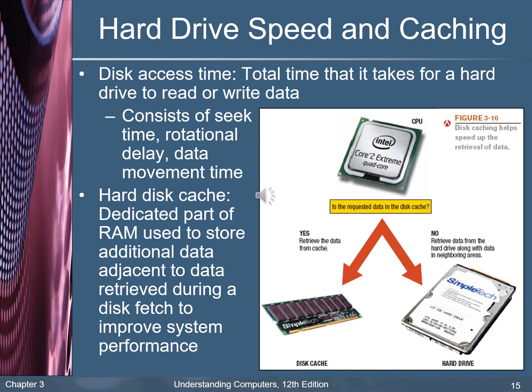In the previous chapter we spoke about CPU time and the computer clock and differentiated between both of them. Here we also need to mention disk access time, which represents the total time it takes for a hard drive to read or write data. It consists of seek time, rotational delay, and data movement time. Hard disk cache is a dedicated part of RAM used to store additional data adjacent to data retrieved during disk operations to improve system performance.